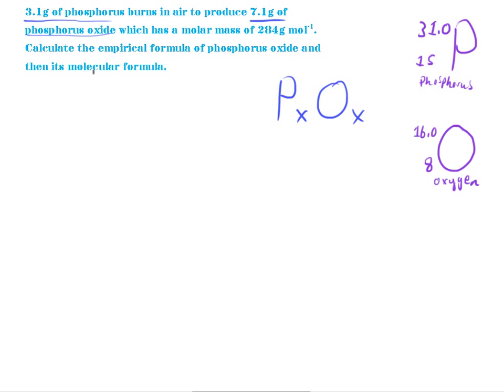Now, I don't know the mass of oxygen but I can work it out by subtracting the mass of phosphorus from the mass of phosphorus oxide since it says it burns in air and the thing that phosphorus would react with when it's burning is oxygen. So, 7.1 minus 3.1 would give me 4. So, therefore, since these are the masses that we know, this is the mass of oxygen.